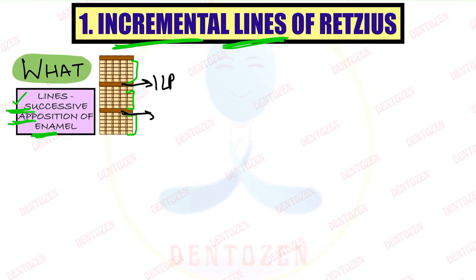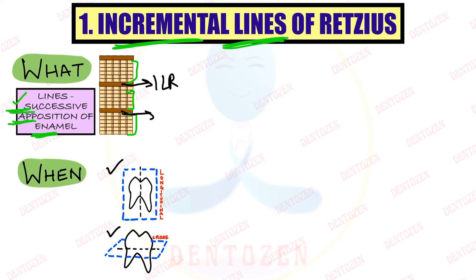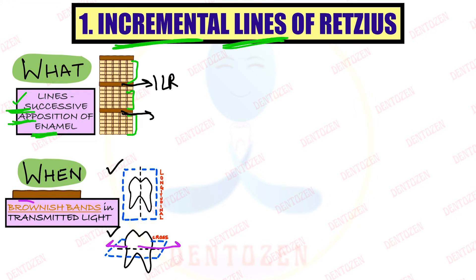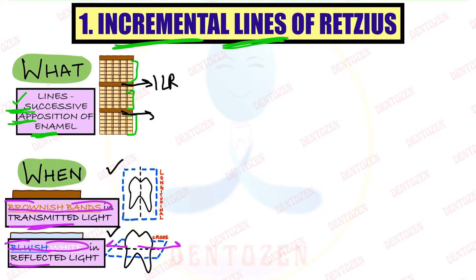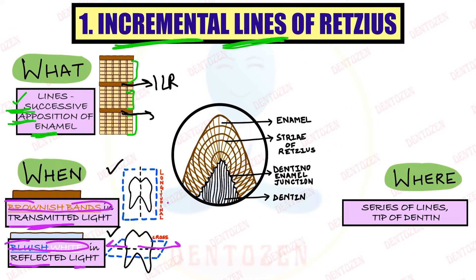These lines can be seen when we prepare the ground section of the tooth. They are seen both in the longitudinal as well as the cross section or horizontal section of the tooth. Under different lights they give different colors: they appear as brownish bands in transmitted light and bluish-white in reflected light. In the longitudinal section they are seen as a series of lines, also known as striae of Retzius, surrounding the tip of the dentine.